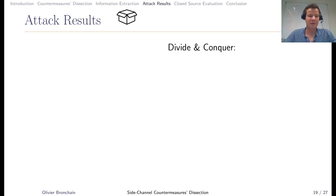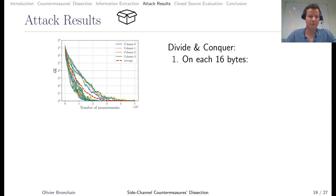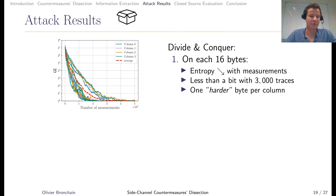Looking at the attack, we did first divide and conquer for the 16 bytes. On the x-axis you have the number of measurements, and on the y-axis you have the guessing entropy. The first observation is that when you increase the number of measurements, you decrease guessing entropy. More precisely, there is just less than one bit left on each byte after 3,000 measurements. We also note there is one harder byte to recover per column.